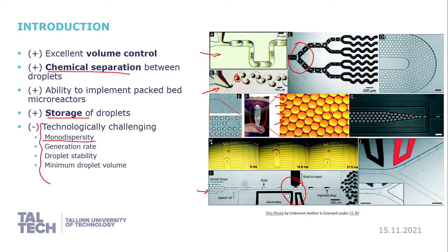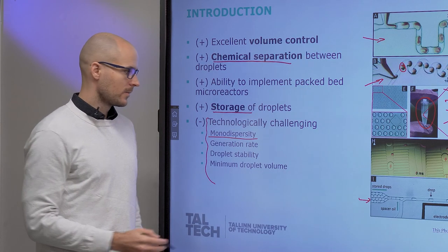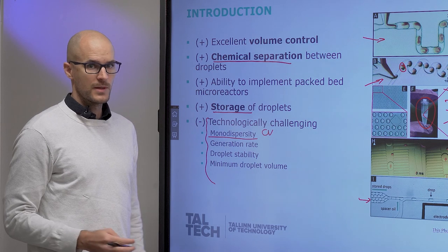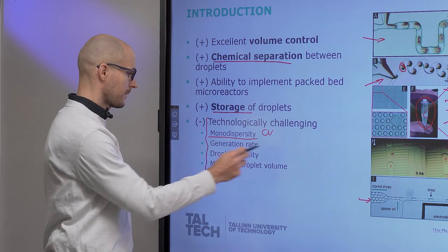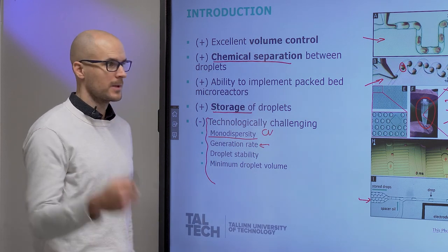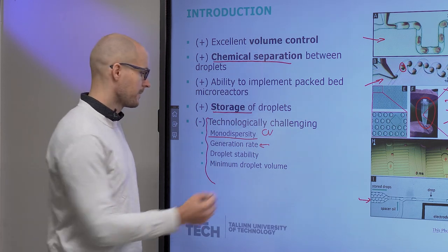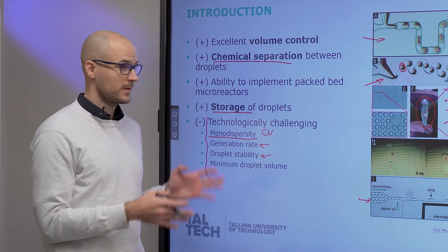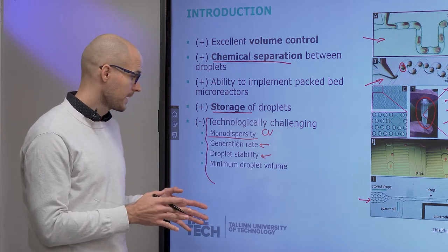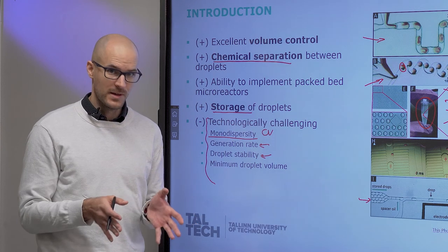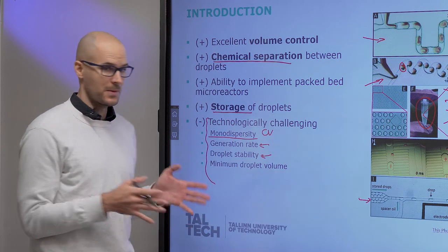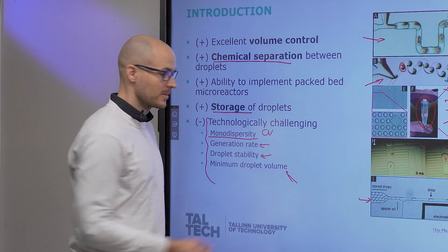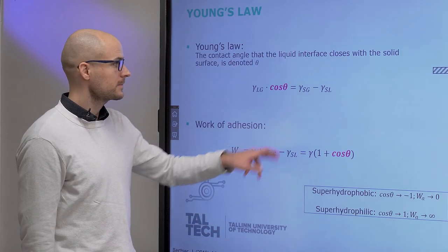So I introduced the monodispersity term. And we usually define it as a coefficient of variation in percentages. The lower, the better. Then we have also the challenge of the generation rate, how many droplets we can produce per unit time. Then their stability, and this is where surfactants will come into play. But let's first talk about fluid mechanics. If you do not apply any surfactant, then these droplets are only held together by fluid mechanics, by forces. Then also the minimum droplet volume that you can achieve is a challenge.